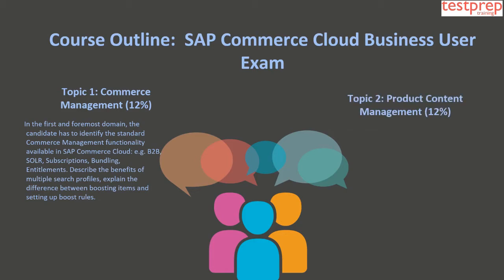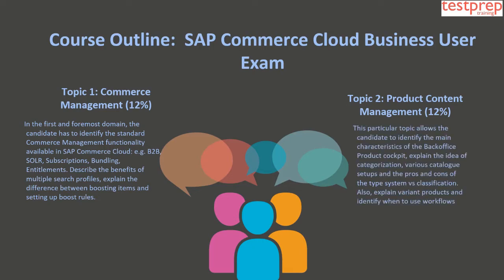Topic 2: Product Content Management, which comprises 12% weightage in the exam. This topic allows the candidate to identify the main characteristics of the Back Office Product Cockpit, explain the idea of categorization, various catalog setups, and the pros and cons of the type system versus classification, as well as explain variant products and identify when to use workflows.